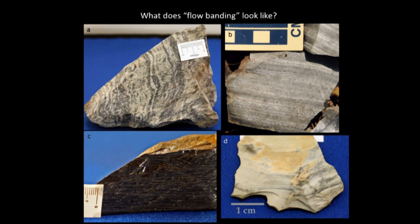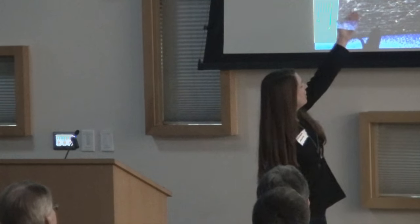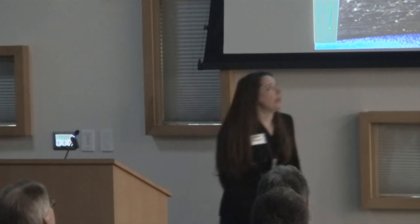The images show weathered and fresh surfaces of flow banding. Pictures A, B, and D are weathered surfaces — B is Moro Mountain with its characteristic chalky white weathering rind; C is the fresh surface. Flow banding can be squiggly as in A, or more parallel as in B. On the fresh surface, there can be some color variation, but often less variation than on the weathered surface.